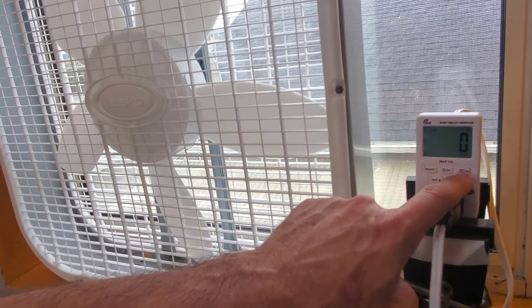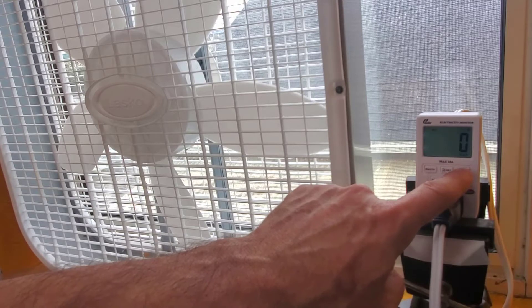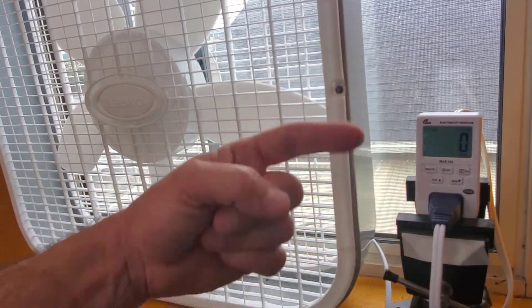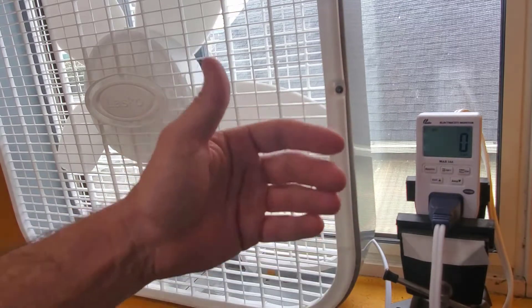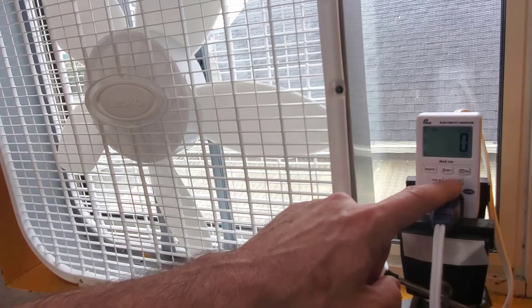There's a kilowatt hour and an hour button. This allows you to store data over time, figure out how much energy something used and for how long it was running, and there's a volts and an amps button.